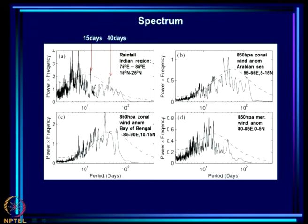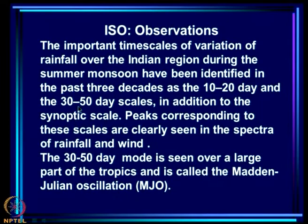Looking at zonal wind over the Arabian Sea and the Bay of Bengal, the picture is somewhat different, but the typical modes observed in rainfall are seen in these spectra. This 30 to 50 day mode, first encountered as the mode in which northward propagations of the TCG occur from the equatorial Indian Ocean to the monsoon zone, happens to be a tropical mode seen over a large part of the tropics — it is called the Madden-Julian Oscillation or MJO.